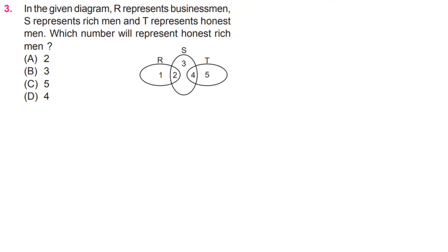In the given diagram, R represents businessmen, S represents rich men, and T represents honest men. Which number will represent honest rich men? D, 4.